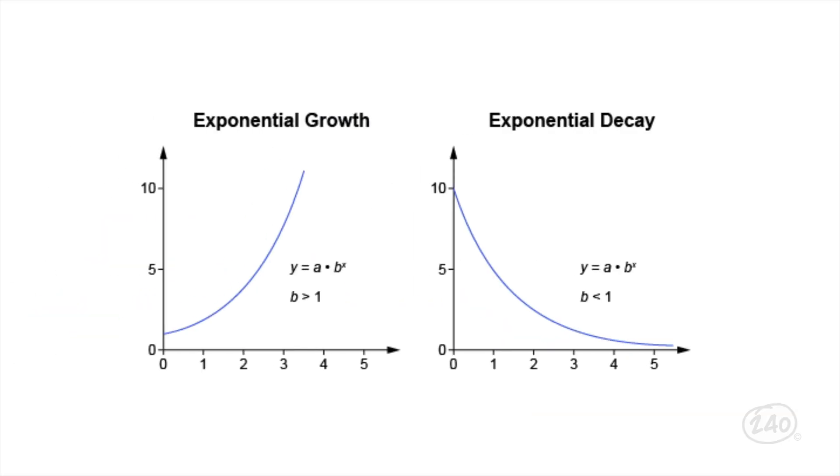By the way, equations of exponential functions take the form of Y equals A multiplied by B to the power of X. If the Y values increase as X increases, then B is greater than 1 and it's exponential growth. If the Y values decrease as X increases, then B is less than 1 and it's exponential decay. But we'll put exponential decay back on the shelf for now.